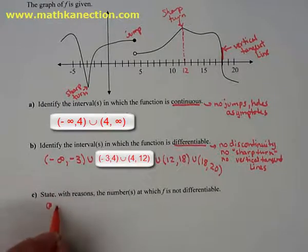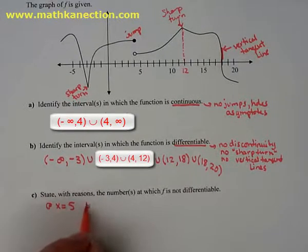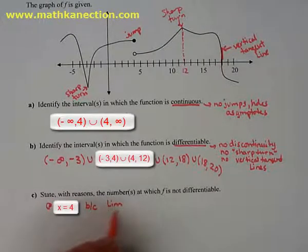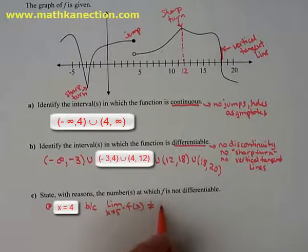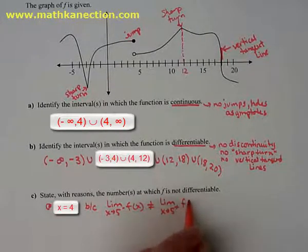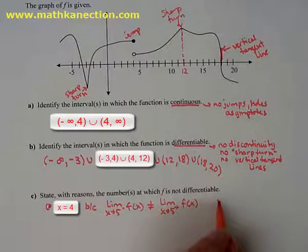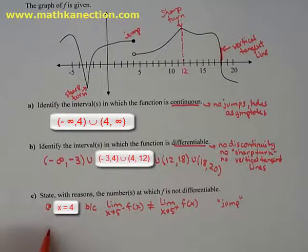Now we have all those different places where the function is not differentiable, and we have to say the reasons why. At x equals 4, the function is not differentiable because the limit as we approach 4 from the left is not equal to the limit as we approach 4 from the right. The two limits from the two sides do not exist, therefore it creates a jump.